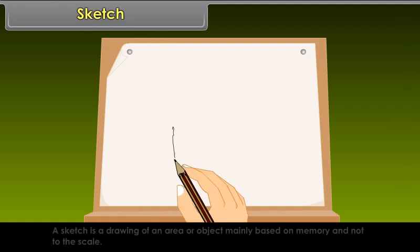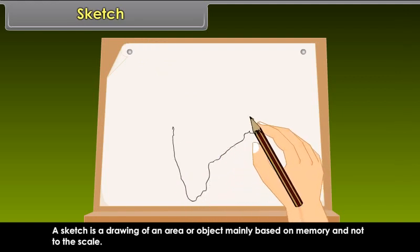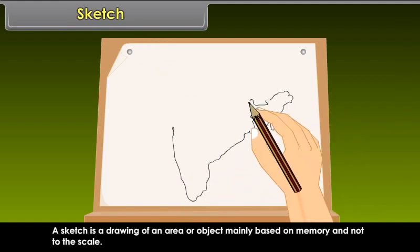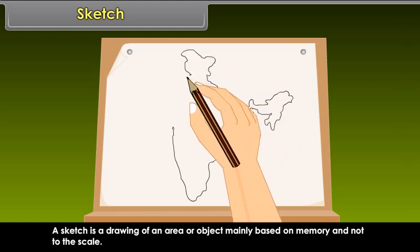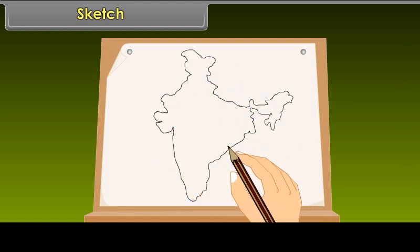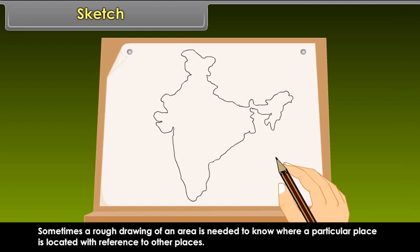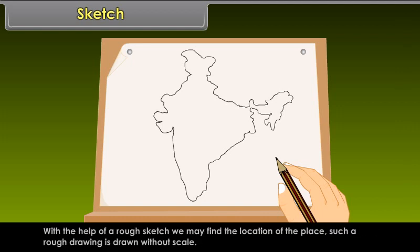Sketch: A sketch is a drawing of an area or object mainly based on memory and not to the scale. Sometimes a rough drawing of an area is needed to know where a particular place is located with reference to other places. With the help of a rough sketch, we may find the location of the place. Such a rough drawing is drawn without scale.